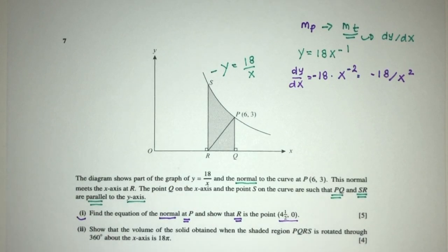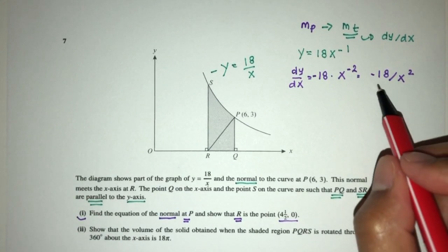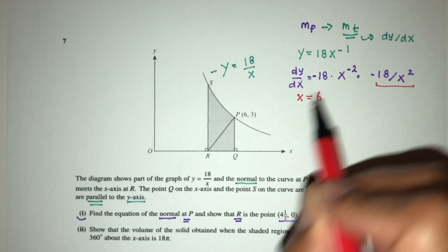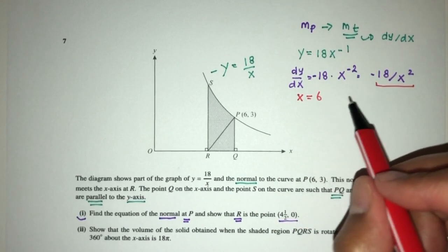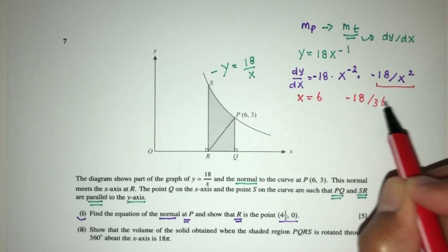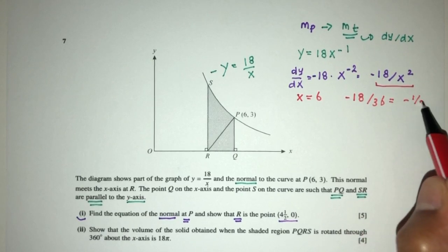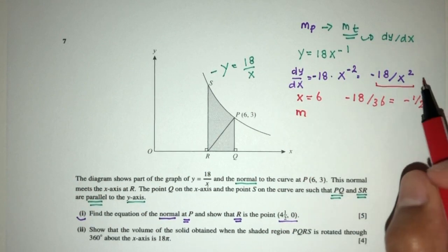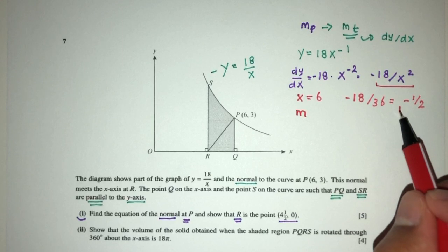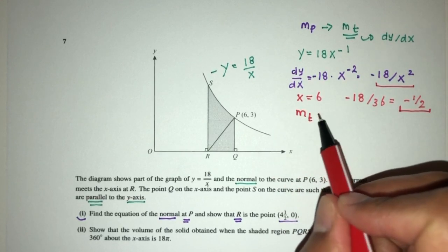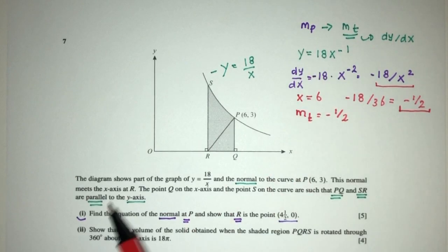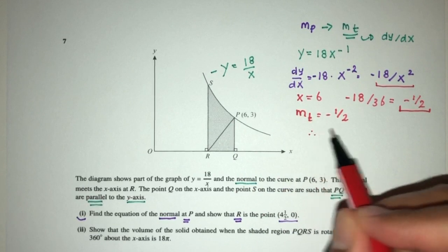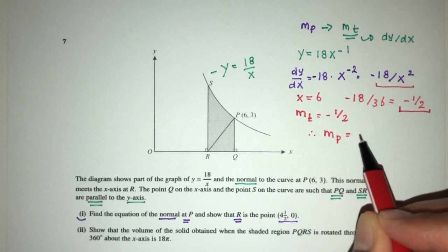We have to find the gradient, so dy/dx at the value of P. P has x equals 6. That will be minus 18 divided by 36, which is minus half. So the gradient of the tangent is minus half. Now the gradient of the normal is perpendicular to the tangent. This will lead to gradient of the normal being 2.